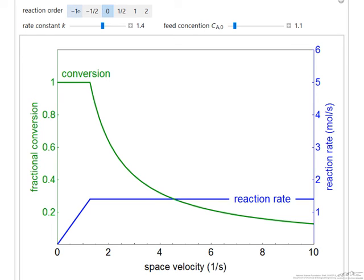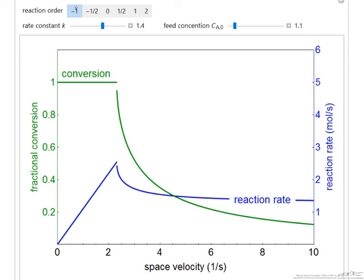If we look at a negative order reaction, we get somewhat unusual behavior, in that the rate increases as the space velocity increases, and then reaches a maximum and then starts decreasing. Conversion is 100% at these lower space velocities, and then the conversion decreases as the concentration increases.